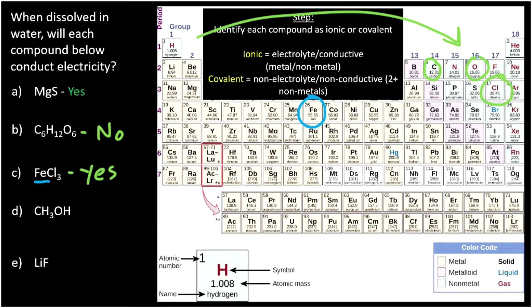Then we have CH3OH. Where is carbon, hydrogen, and oxygen? That's actually the same combination of elements we saw in B, where all of them were non-metals. And so that means that's not going to make a conductive solution.